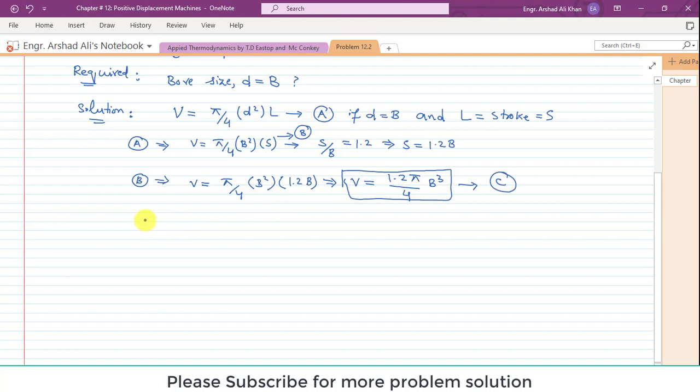We can find V from the given information in problem 12.1 as well as 12.2. V is equal to V dot by n, where V dot is the free delivery given in problem 12.1, that is 0.3 cubic meters per minute, and n is 1000 revolutions per minute.